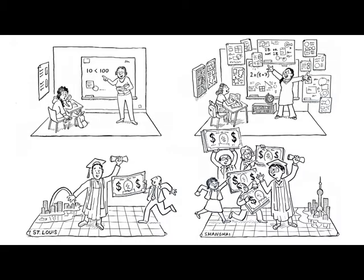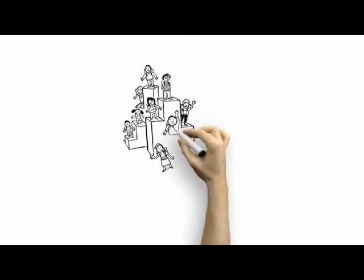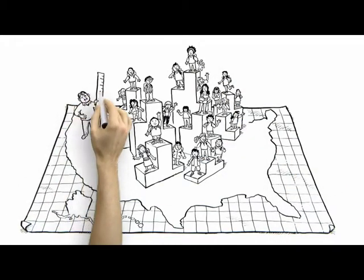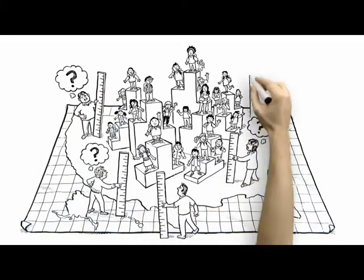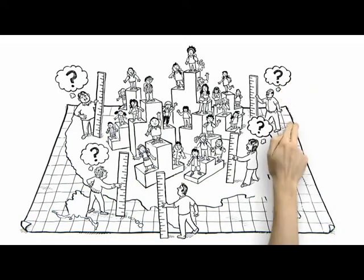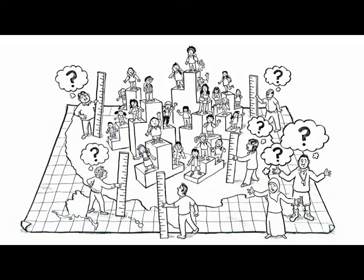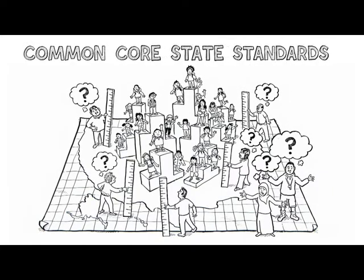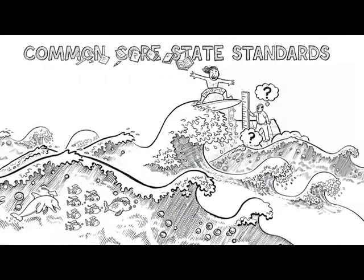Because for years, states have been setting different standards for what students should know and be able to do at each grade level. That's making it too hard to know if our kids are really doing well enough overall and if they can really compete for a job someday. What we really need are clear goals. That's where the Common Core state standards come in. They're like a total sea change in education. Consistent, strong, clear benchmarks for English language arts and math.